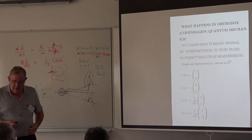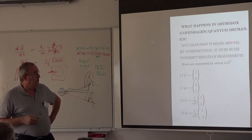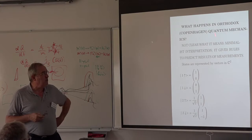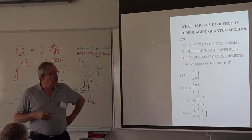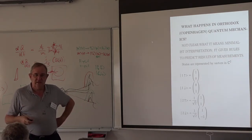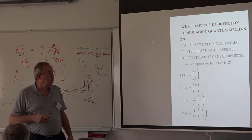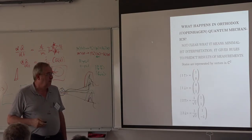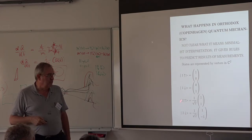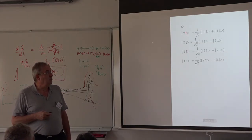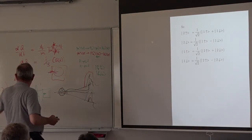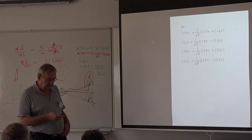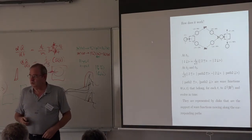Now let's go to the Copenhagen view, or at least what I think is the Copenhagen view. It's never clear to me what orthodox quantum mechanics means. The minimalist interpretation is that it gives rules to predict results of measurements. If you want to go beyond that, you get into indefinite or confused things. The states are represented by vectors in C². One-up and one-down would be the eigenvectors of the sigma-z matrix that Matthias mentioned, and two-up and two-down are the eigenvectors of the sigma-x matrix.